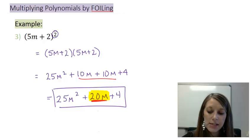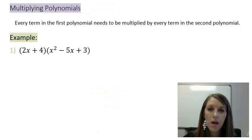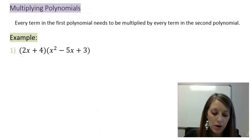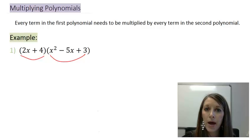So, that finishes up my FOILing example. So, let's move on to my last example of polynomial multiplication. Now, in this example here, I have a binomial times a trinomial, or a 2 by 3.